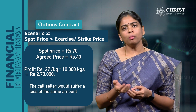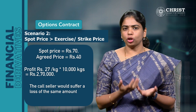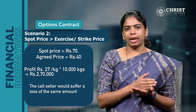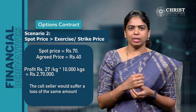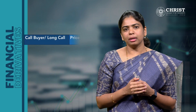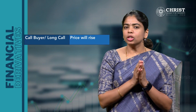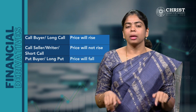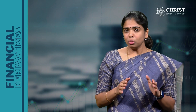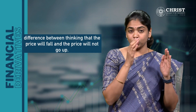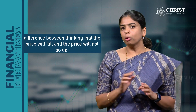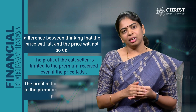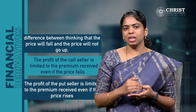Now, if the trader — who is a seller of the underlying asset — would like to enjoy the option, then he has to buy a put option, because the put option gives a seller of the underlying asset the right but not the obligation to sell. Here are a few key points to remember: the call buyer always expects the price to rise; the call seller always expects the price not to rise; a put buyer always expects the price to fall; and a put seller expects the price not to fall. Please note there is a huge difference between thinking the price will fall and thinking the price will not go up — both are not the same. The profit of the call seller is limited to the premium received even if the price falls; similarly, the profit of the put seller is limited to the premium received even if the price rises.